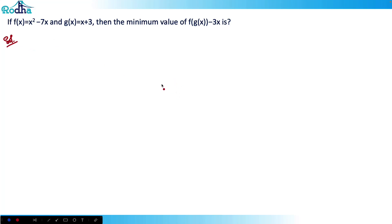Hi guys, let's look at this next question from CAT 2021 Slot 3, from algebra. f(x) is equal to x² minus 7x and g(x) is equal to x plus 3. Find the minimum value of f(g(x)) minus 3x. First of all, I need to calculate f(g(x)).